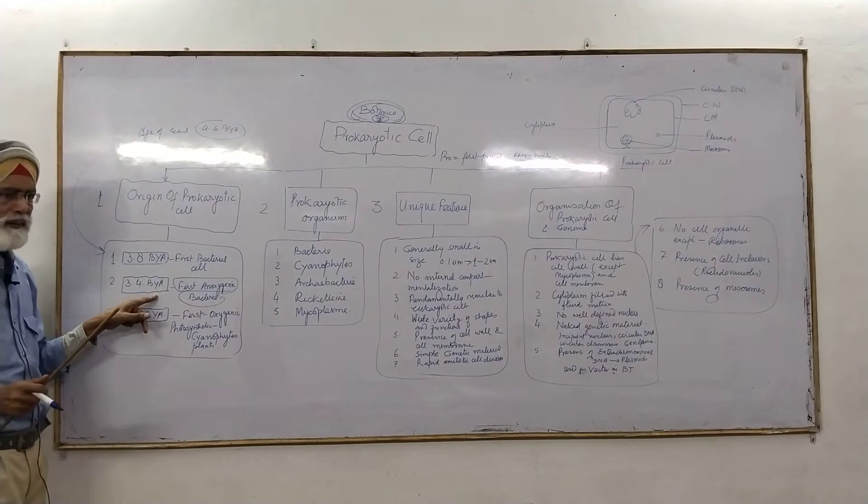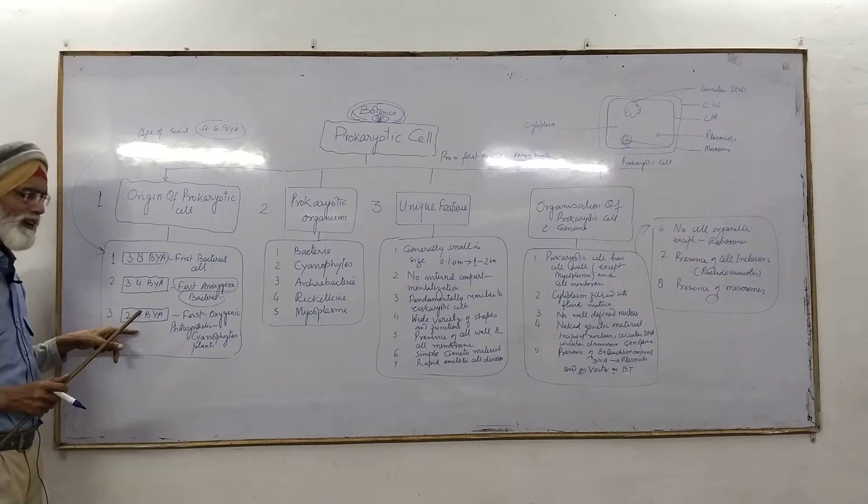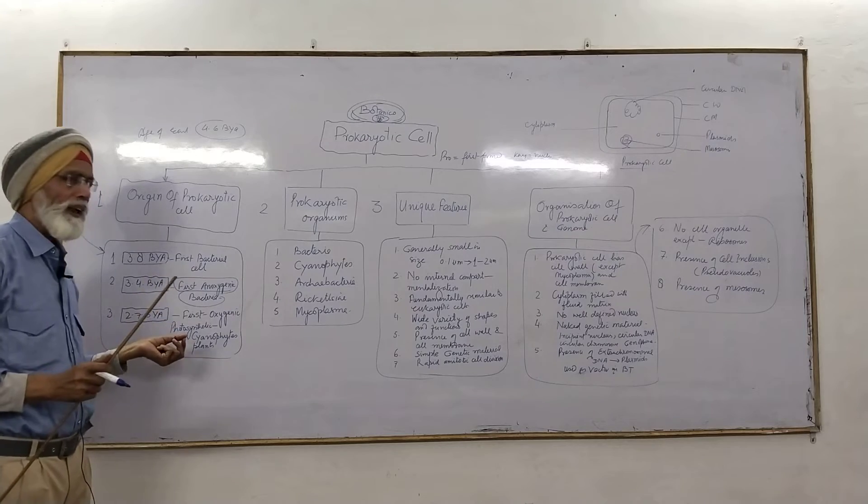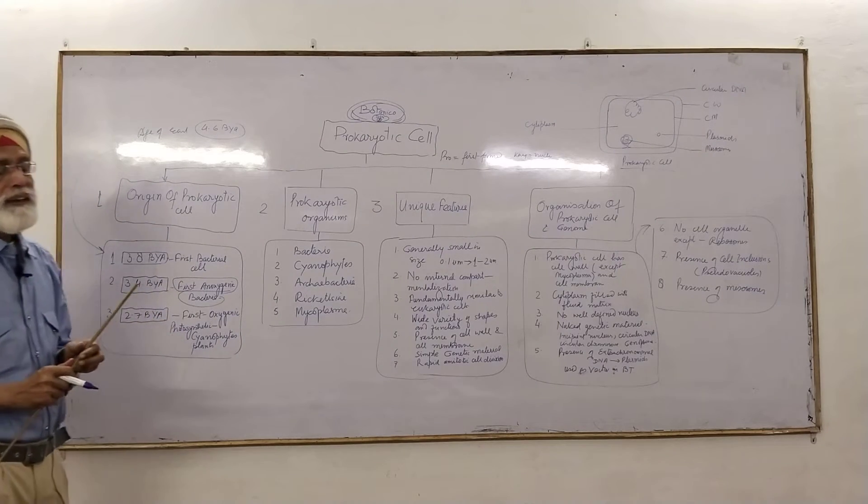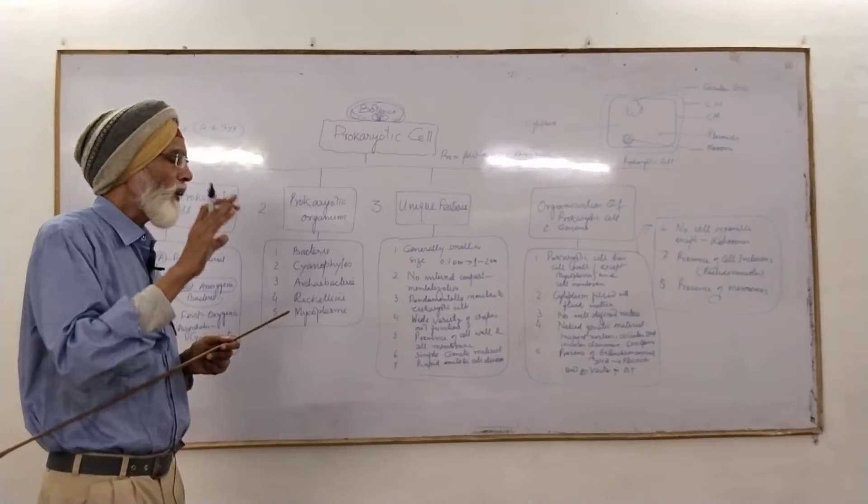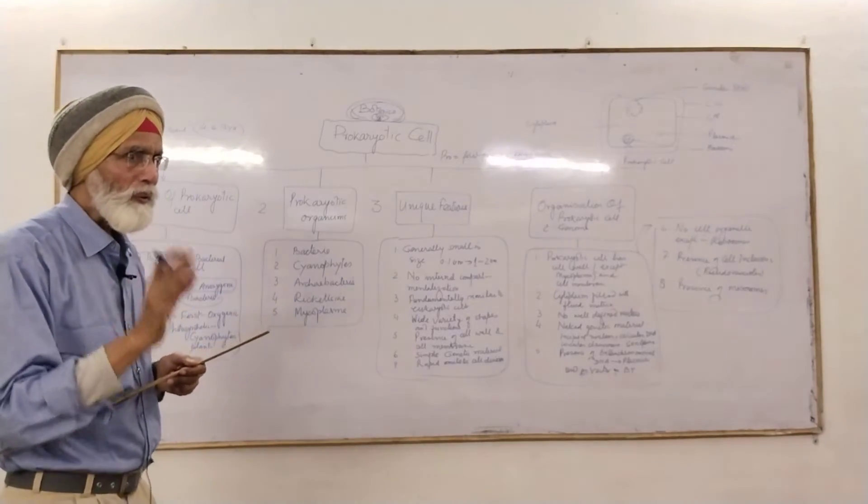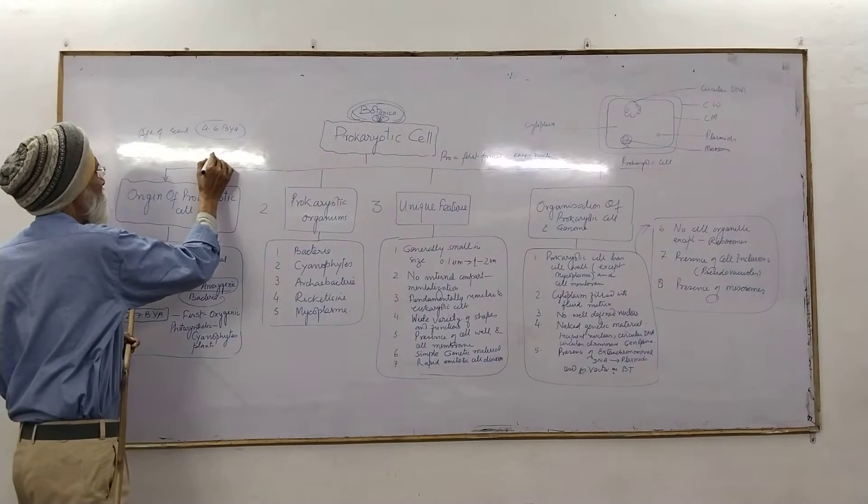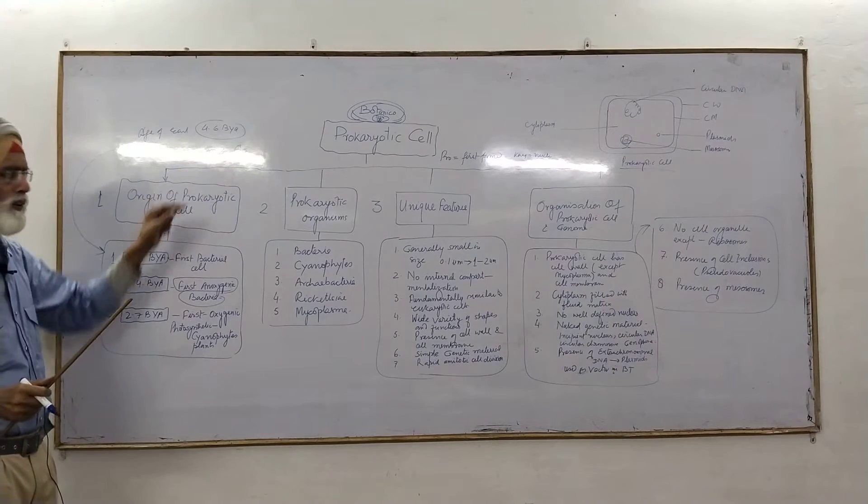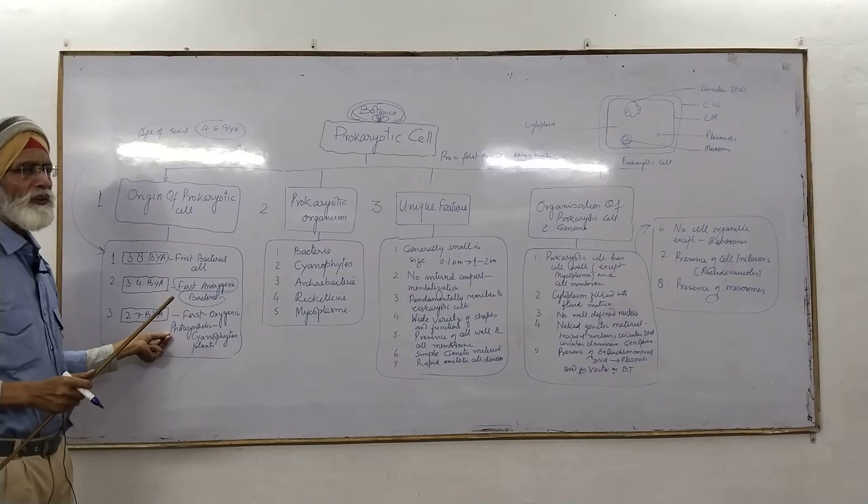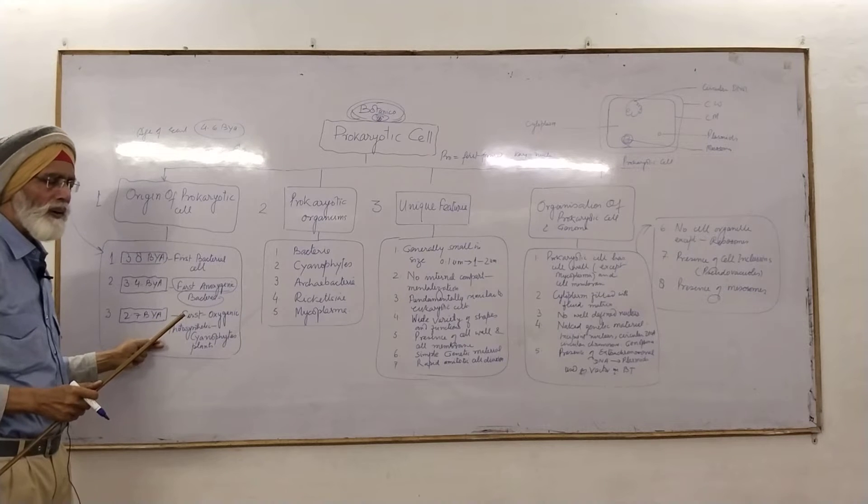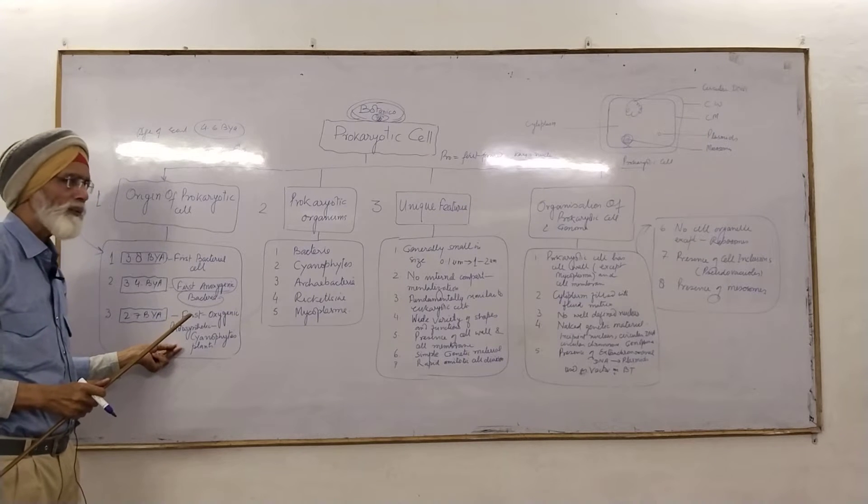After 3.4 billion years, for the first time, 2.7 billion years ago, a new type of cell came in existence. And that was cyanophytes or blue-green algae. And they were the first oxygenic photosynthetic organism on the earth. And they were the first to organize an oxygen revolution on this earth. These are the first prokaryotic organisms, so called cyanophytes or the beginning of the initial plant stick.